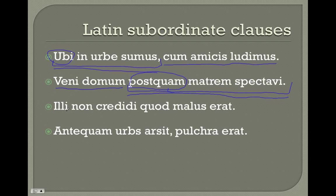Another example: 'Illi non credidi quod malus erat.' As we're reading, we come to our subordinating conjunction 'quod.' We find the verb — 'erat.' So 'quod malus erat' is our subordinate clause, and 'illi non credidi' is our main clause. 'I didn't trust him' is the main clause, and 'because he was bad' is the subordinate clause.